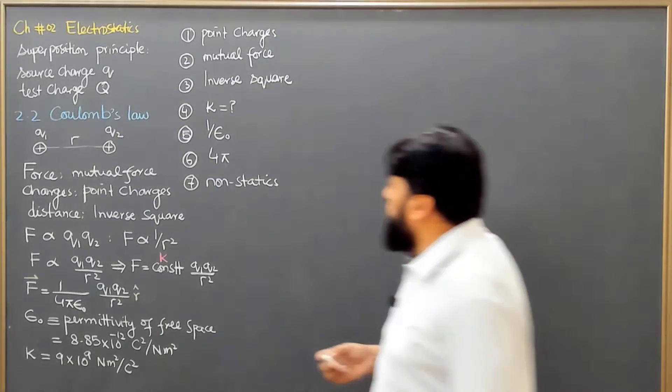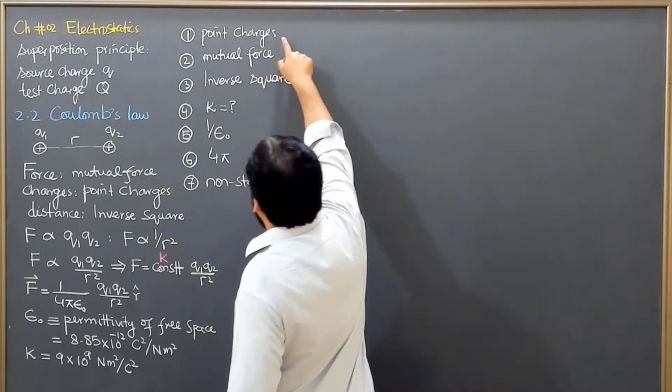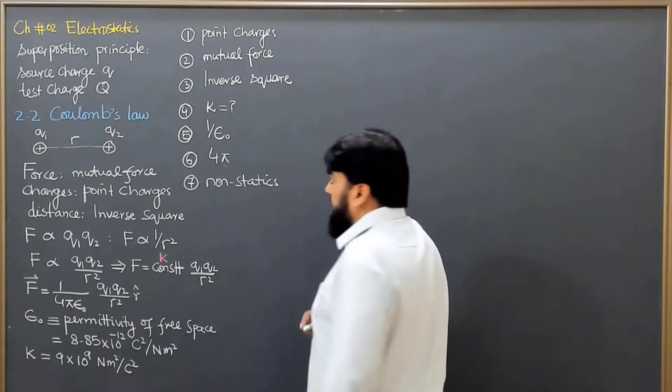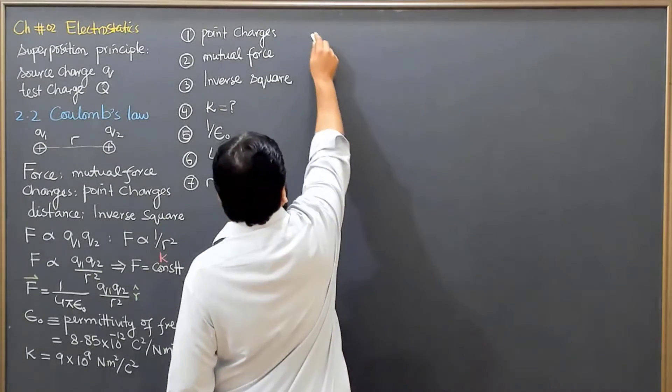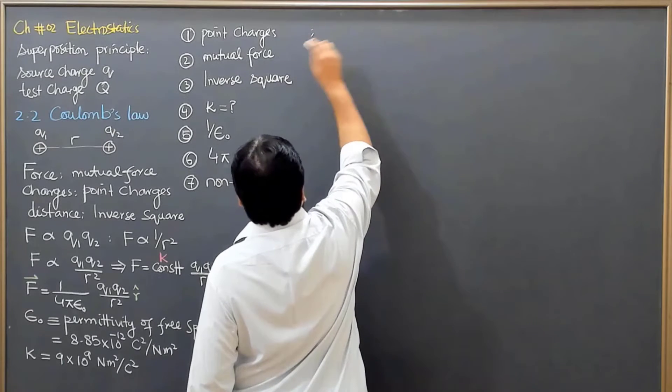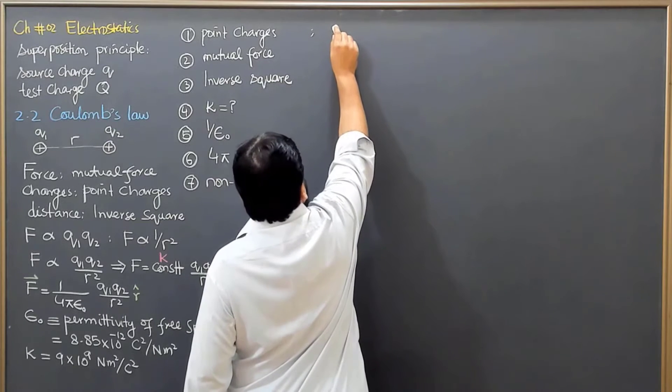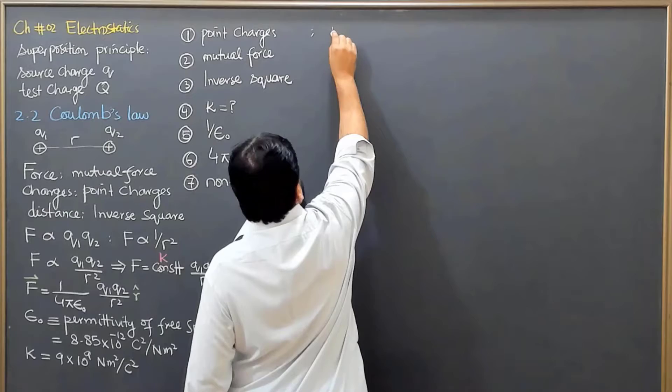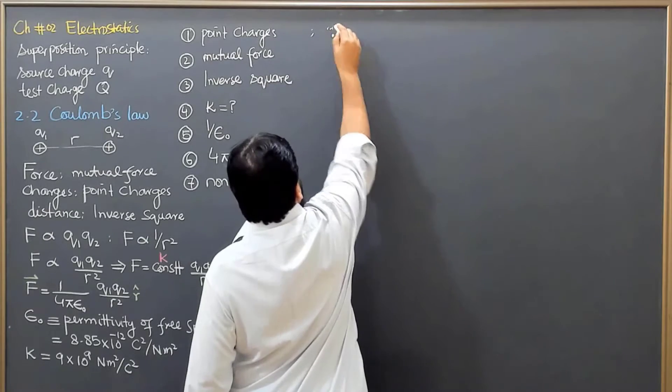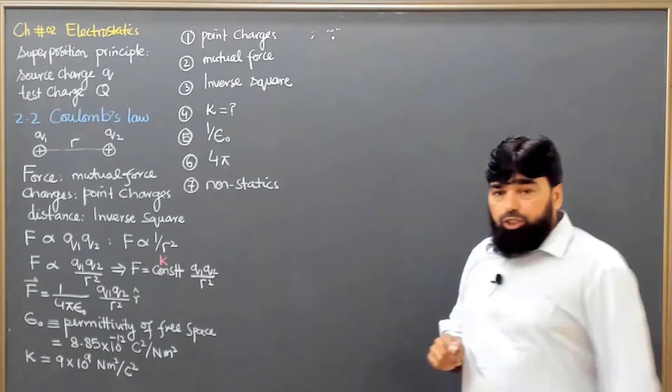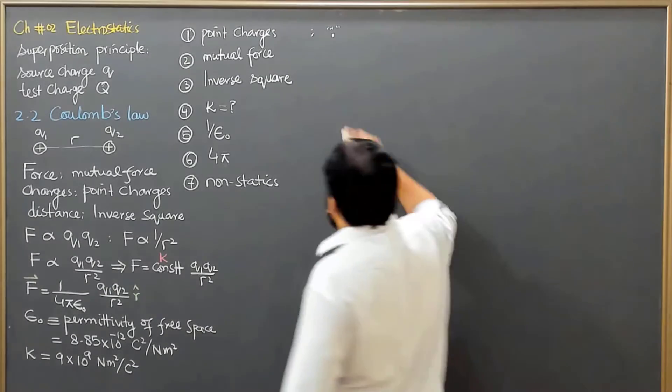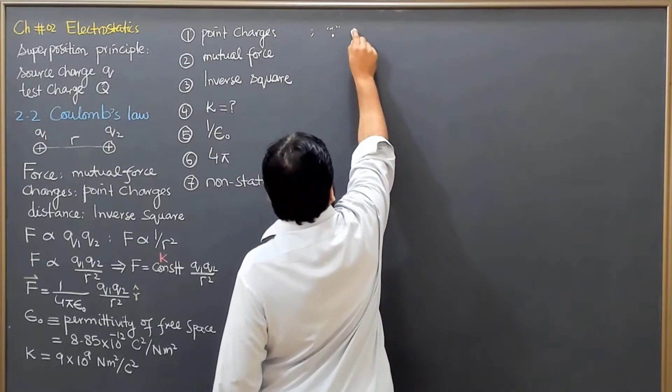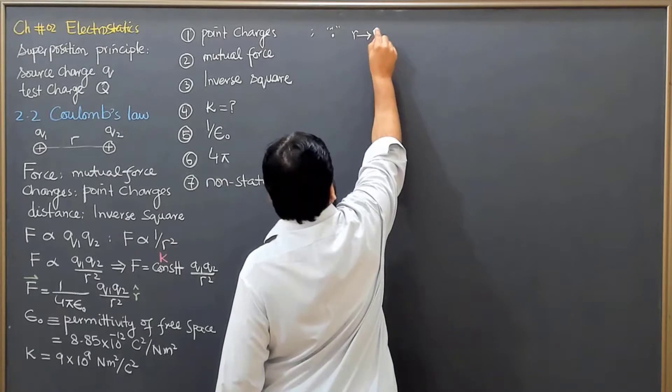Let's start with the first one - why we are having point charges. The very first thing that I'm discussing is point charge. What is a point charge? Mathematically, we can say that it is a sphere whose radius goes to zero.